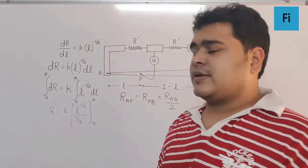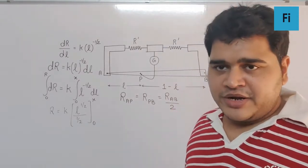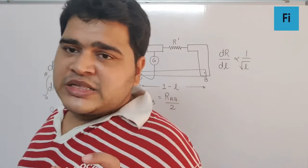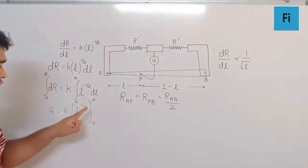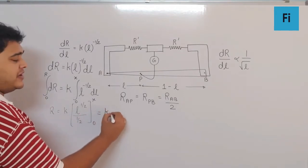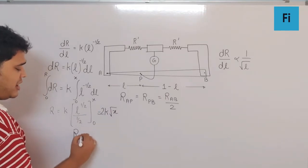We can say this is nothing but 2 root L. If we substitute this value as upper limit minus lower limit, we get R = 2k√x, where the starting limit is always taken as 0, which means I'm going to take the starting limit always as A.